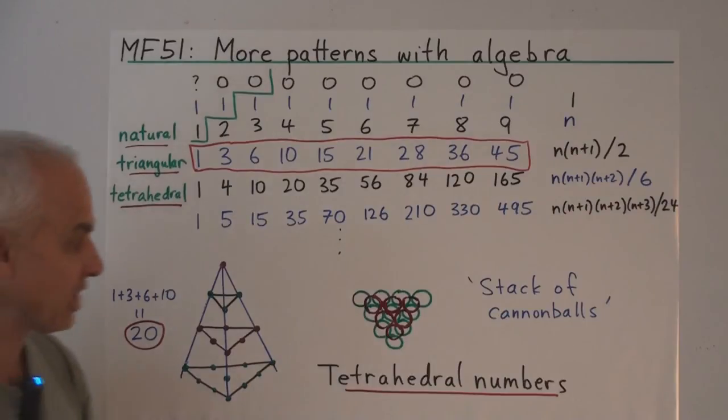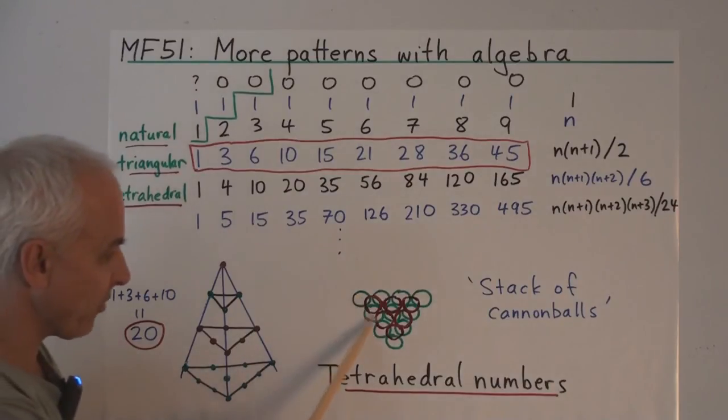This has a physical interpretation in terms of a stack of cannonballs. So if you imagine this bottom layer representing 10 cannonballs, the green ones here, arranged in a triangle.